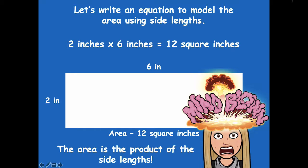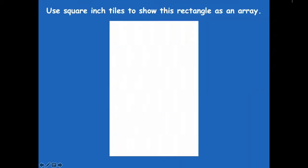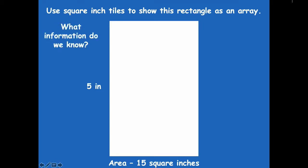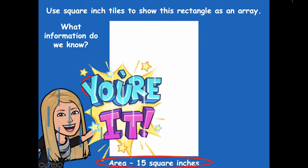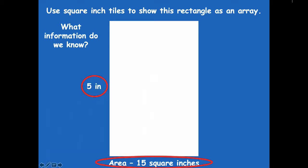Those two side lengths multiplied give me the area — that's amazing! Now that we know we can multiply side lengths to find area, this is really going to help us. Now we're going to use square inch tiles to show another rectangle as an array. This side is five inches and the total area is 15 square inches — create a rectangle using that information.